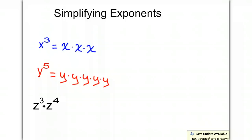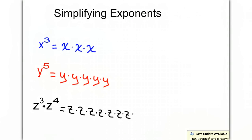If we look at the last one, we can rewrite it as z times z times z. Then we are multiplying z cubed — so 3 z's — multiplied by z to the power of 4, so 4 more z's multiplied.